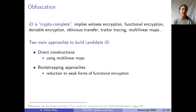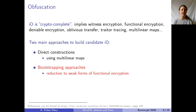The first category is what I'm going to call direct constructions of IO using multilinear maps. The second category — which is the one we're going to be interested in in this talk — is constructions that use bootstrapping from some variant of functional encryption to construct IO in a provable way. The construction we're going to be interested in here is one of this new generation of IO.